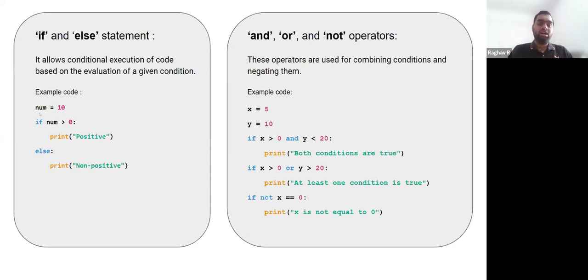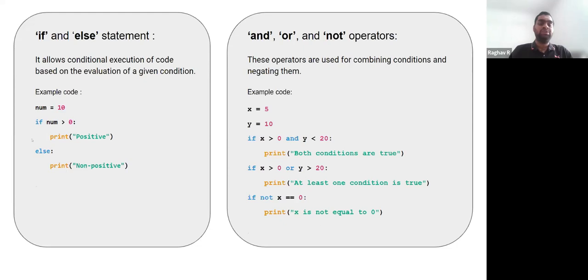For example, if the value of a variable num is 10, we execute either this print statement or the other based on a condition. The condition here is if the number is greater than zero.